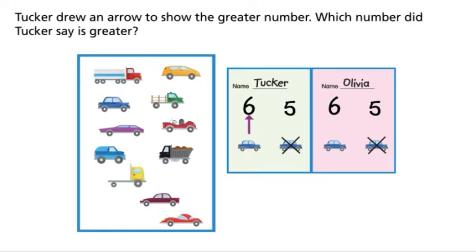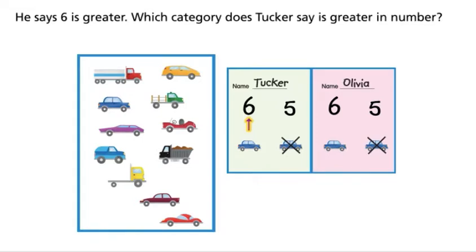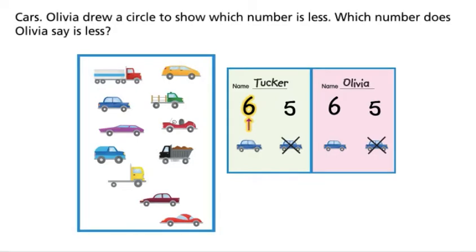Tucker drew an arrow to show the greater number. Which number did Tucker say is greater? He says six is greater. Which category does Tucker say is greater in number? Cars.